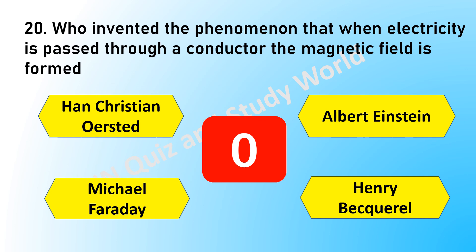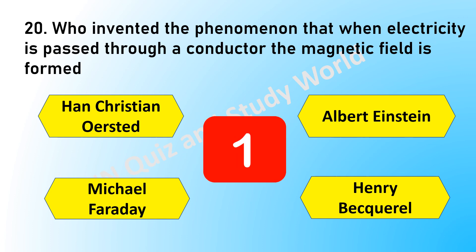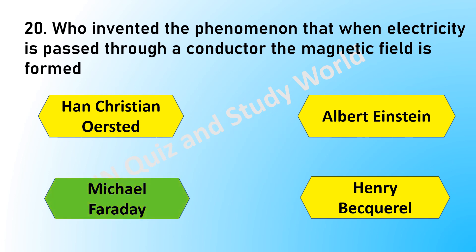Who invented the phenomena that when electricity is passed through a conductor, the magnetic field is formed? Is it Hans Christian Ørsted, Albert Einstein, Michael Faraday, or Henry Becquerel? The answer is Michael Faraday.